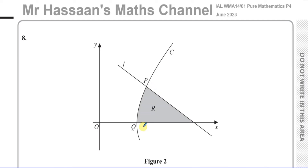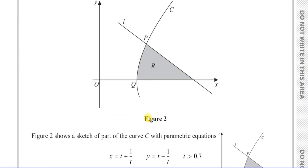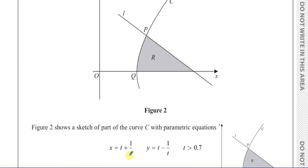There's a sketch of part of the curve C with parametric equations: x equals t plus 1 over t, y equals t minus 1 over t, and t is greater than 0. That constraint on t will most probably be something significant for us to take note of.